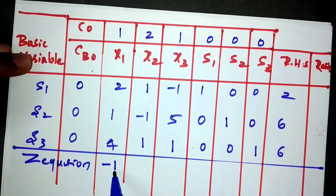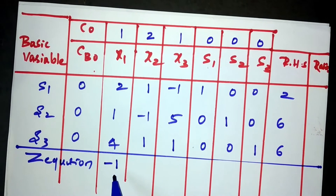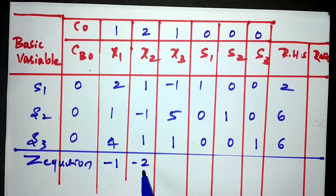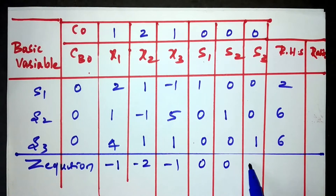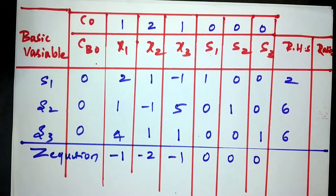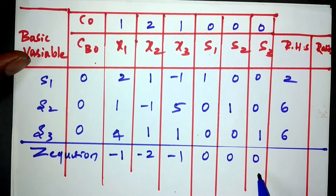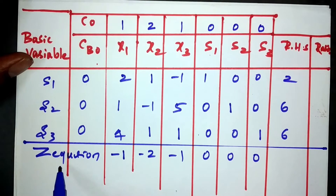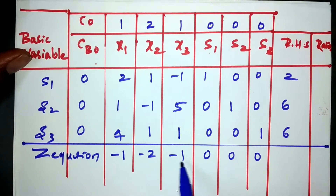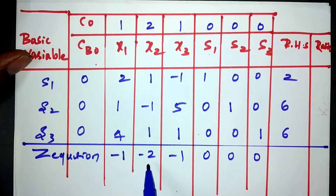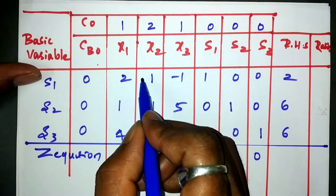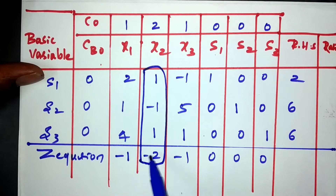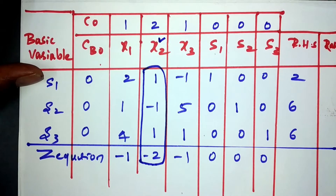Similarly, for x2 I get minus 2, for x3 I get minus 1, and for s1, s2 I get 0, 0. Among these Z equation values (minus 1, minus 2, minus 1), the highest negative value is minus 2. So I mark the x2 column as my entering column. The entering column variable is x2.